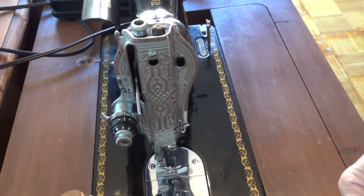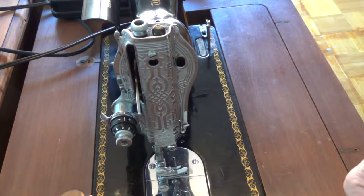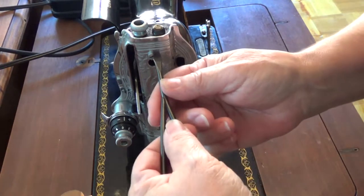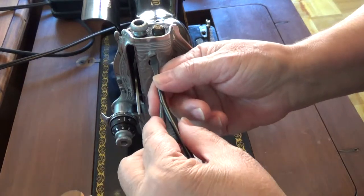The upper tension is on the face plate of the Singer 1591. So the first step is we remove the face plate. There's this medium-sized screw here.